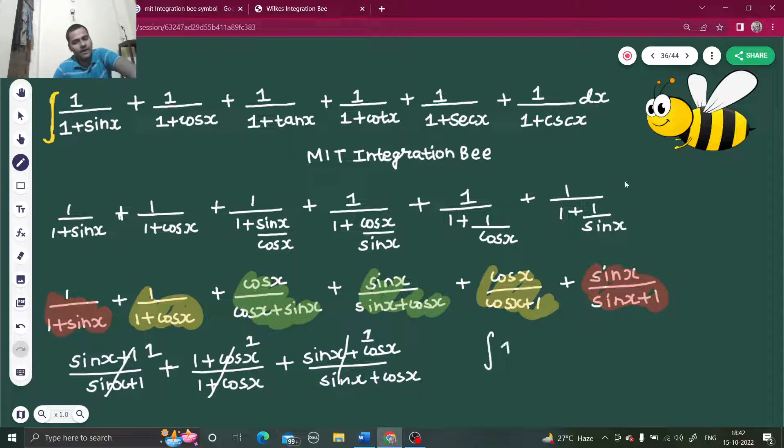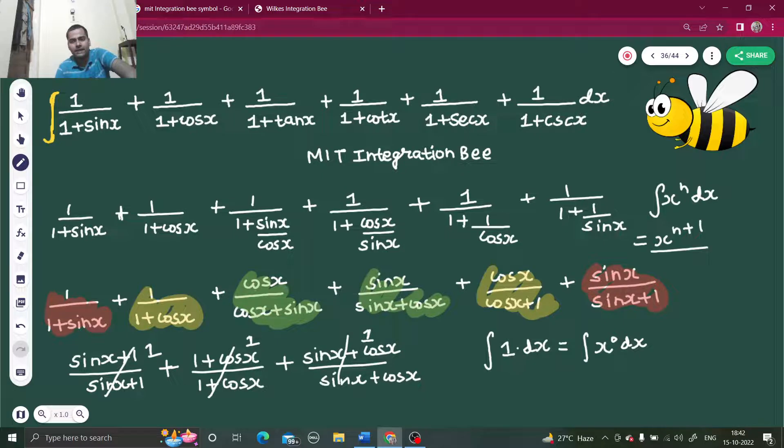Integral of 1 dx. Coming to the simple rules of integration, you can write this 1 as x power 0 dx. If I use this formula, integral of x power n dx is x power n plus 1 divided by n plus 1 plus c. Then this becomes x power 0 plus 1 divided by 0 plus 1 plus c.